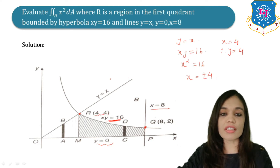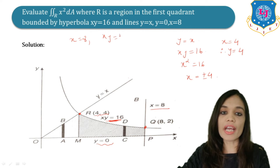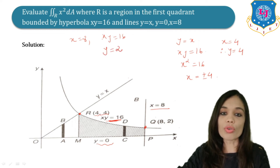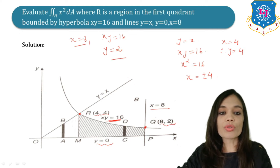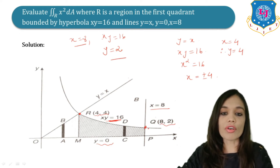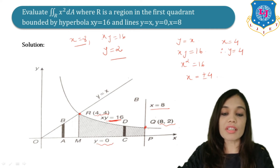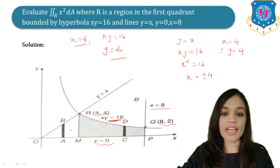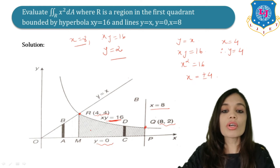The second intersection is between the line x = 8 and the hyperbola xy = 16. Putting x = 8, we get y = 2. So the second point of intersection is (8, 2). Our region is therefore divided into two parts, R1 and R2.